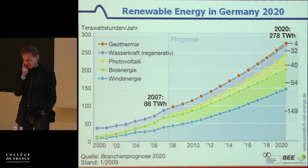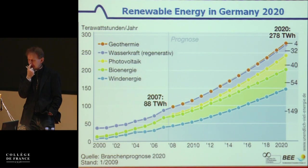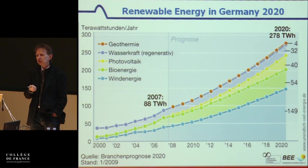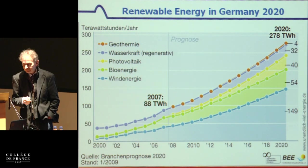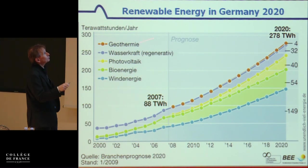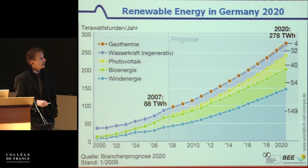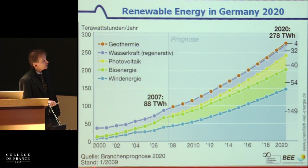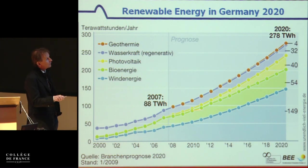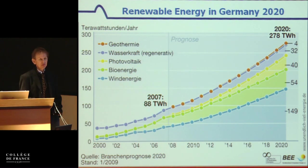This is a slide from the German government — some German text, I apologize. This is the competing technology, or today's state-of-the-art technology. This is the prediction for renewable energy for the year 2020 in Germany. I can say we are now here and we are actually ahead of plan.